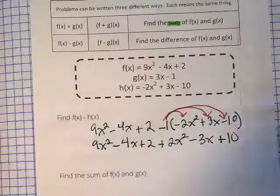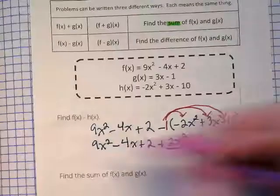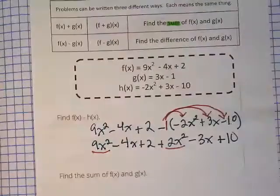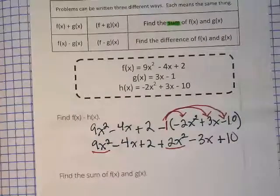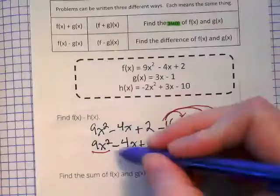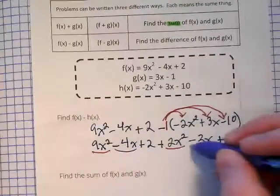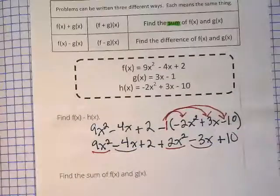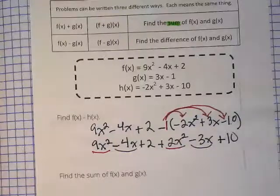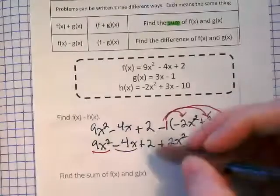We're looking here for like terms. This and this are like terms. This negative 4x is a like term with this negative 3x, and then we have 2 and 10 that are like terms.